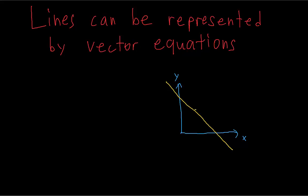Say we are given a point A that we know is on the line. We're going to refer to A by its position vector — A is the position vector from the origin to this point on the line. Once we have a point, we only need one more piece of information: a vector which is parallel to the line. This is called the direction vector of the line, because it's pointing in the direction of the line.